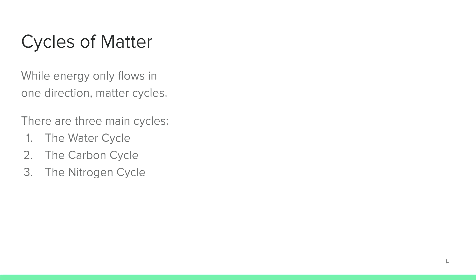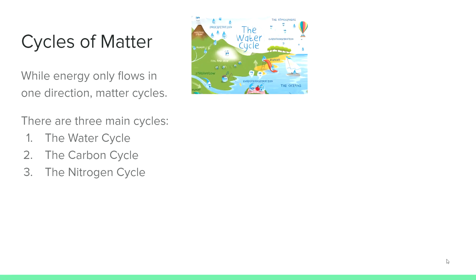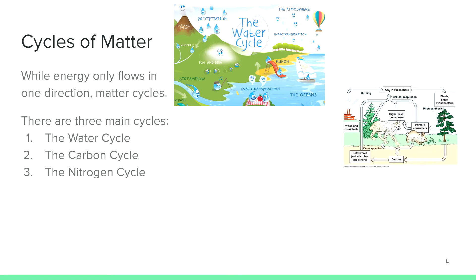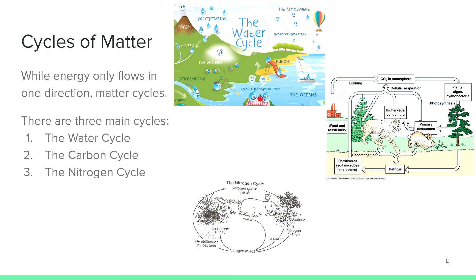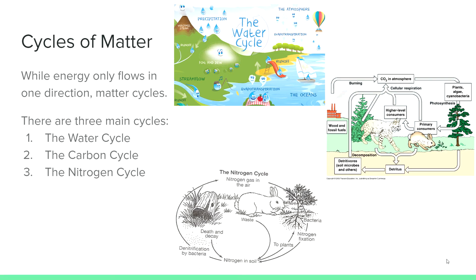While energy only flows in one direction, matter cycles through an ecosystem. There are three main cycles: the water cycle, the carbon cycle, and the nitrogen cycle.